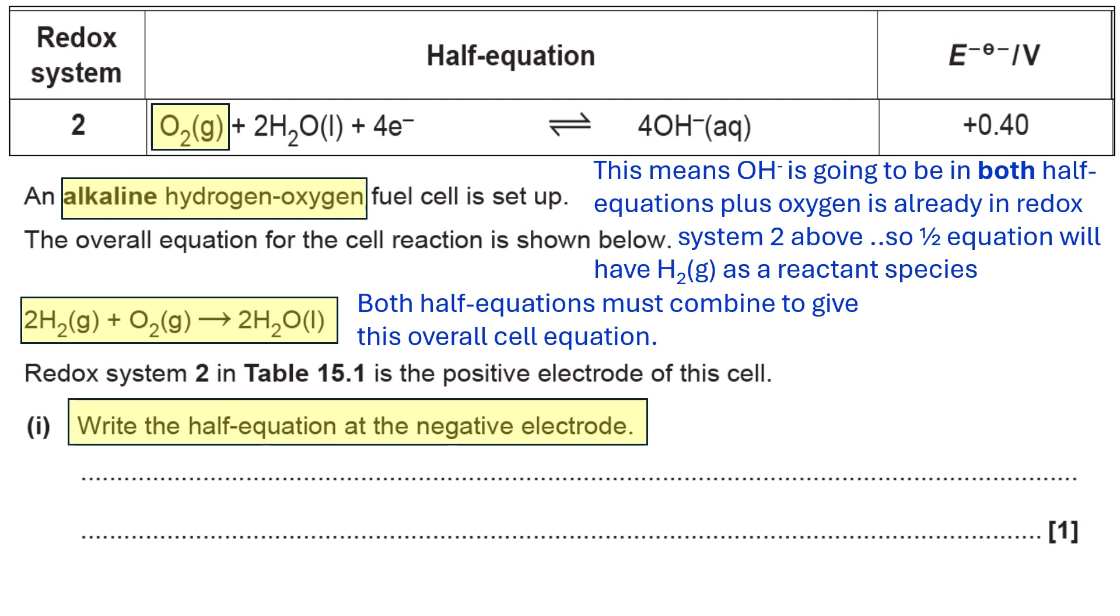And because it tells you that the negative electrode, that must mean that it proceeds as an oxidation. In other words, if it was written out as a reduction, like you'd find it in a redox system table, it would have the electrons on the left hand side. But what we'd say is the position of equilibrium would shift to the left.